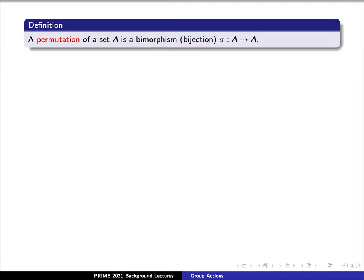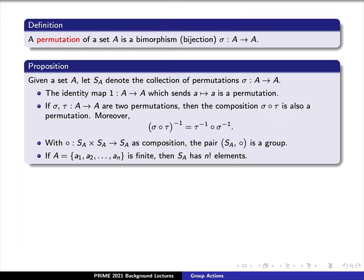We have the following main results. Given a set A, let S sub A denote the collection of permutations sigma. The identity map, which sends lowercase a to itself, is an example of a permutation. If sigma and tau are two permutations, then their composition, sigma circle tau, is also a permutation.